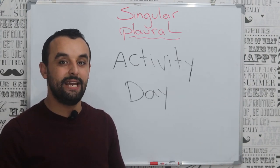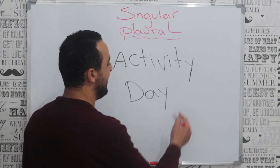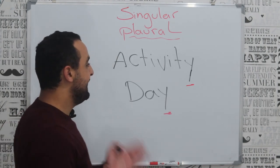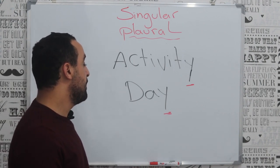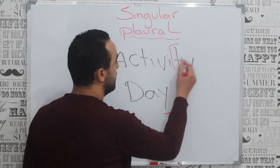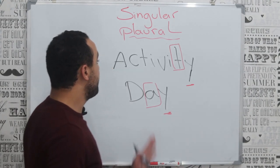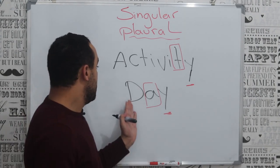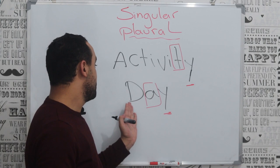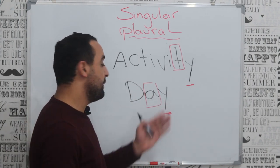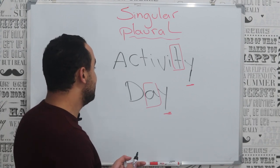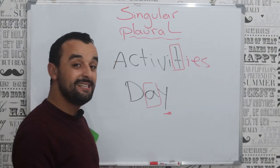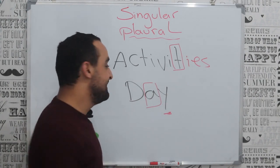Now you have to pay attention because we have two words with a similar ending — both end with Y and both are singular. To make them plural, we have to look at the letter before the Y. Activity ends with Y and before that Y we have a consonant letter. Day also ends with Y but before it we have a vowel letter.